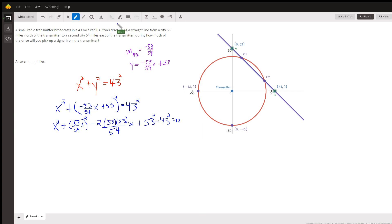Hopefully you're allowed to use a calculator to solve the problem. But this circle represents the radius that the transmitter centered at the origin can transmit. So its equation is x squared plus y squared equals 43 squared. That's the equation of that circle.